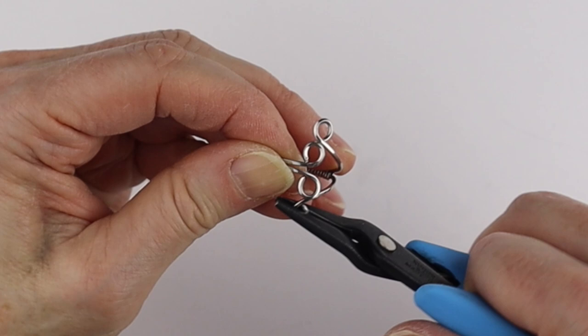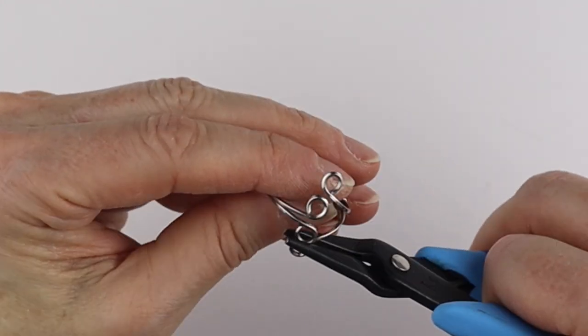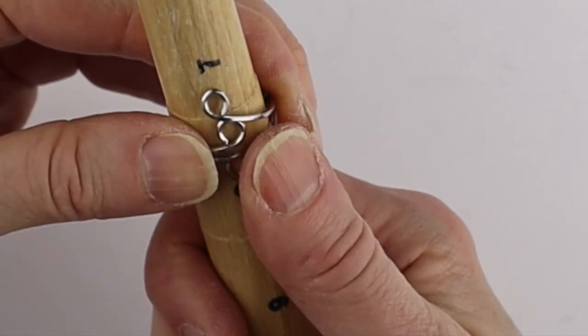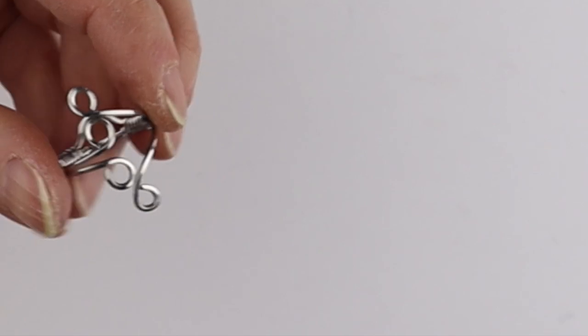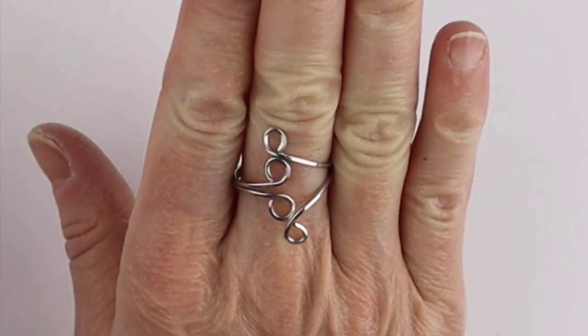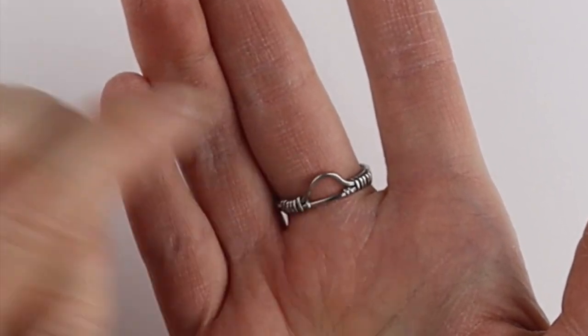And now you can adjust these. How you like them. Just get them to sit flat. Put it back on the ring mandrel. Adjust it. Hammer it if you like on a steel mandrel. And there you have a super funky stainless steel ring. This little part sits flat at the back.